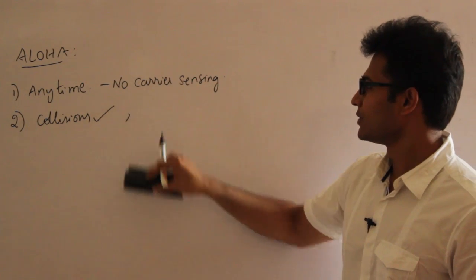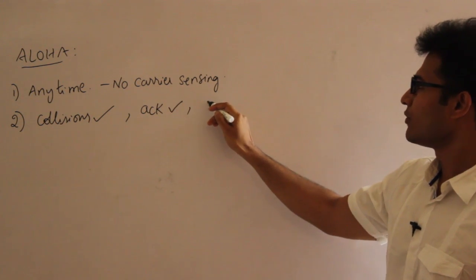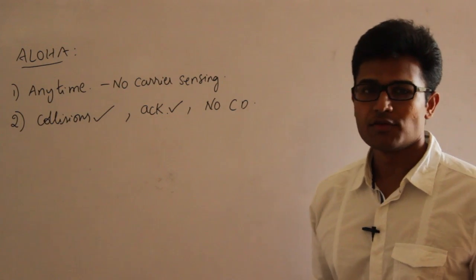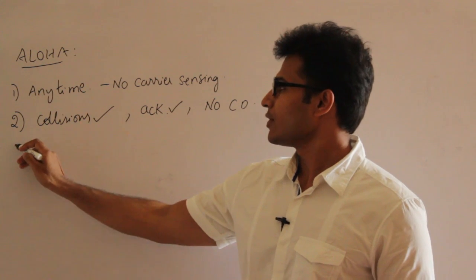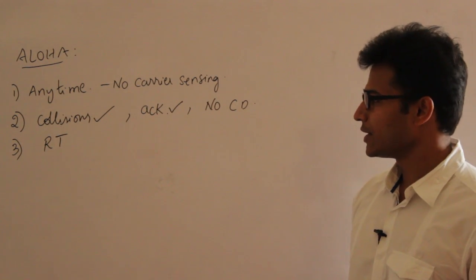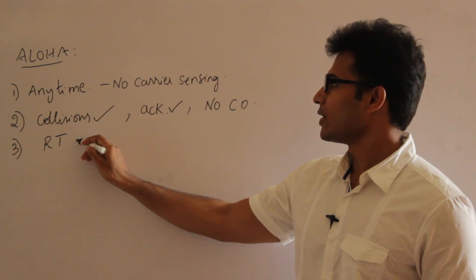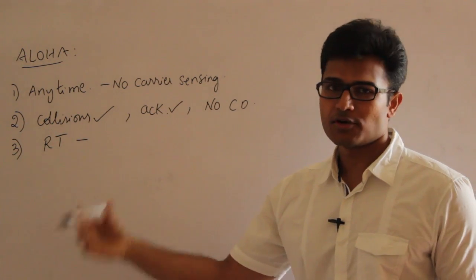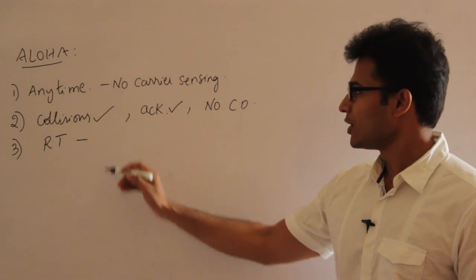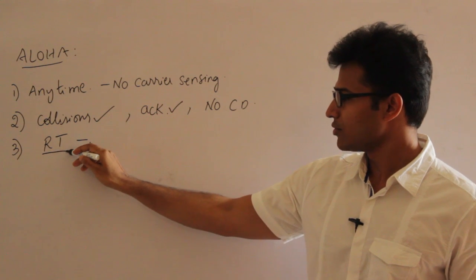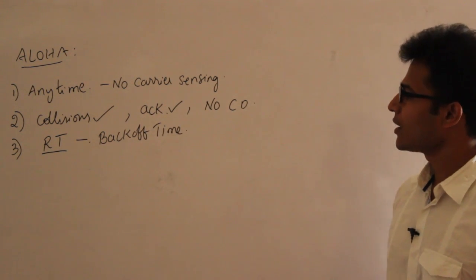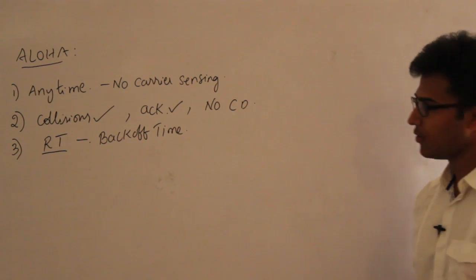There are acknowledgements in Aloha, therefore there is no need for collision detection. If your data is lost in a collision, you are not going to get an acknowledgement. If you don't get the acknowledgement, it means your data was lost. Then we retransmit the data packets after some random amount of time, called the back-off time. Since every station picks a random back-off time, the probability of a second collision is very low.